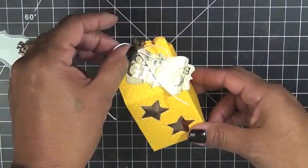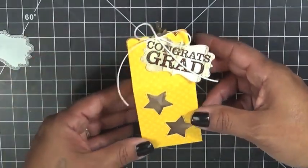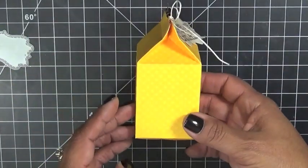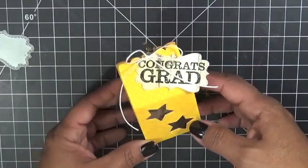So anyways, this here, I used my stitched curly label die for the actual sentiment. Now I didn't want to do too much to this since this is for a boy. You know what I'm saying? You add too much and it kind of girlies it up and I didn't want to do that. I wanted to keep it as manly as possible.